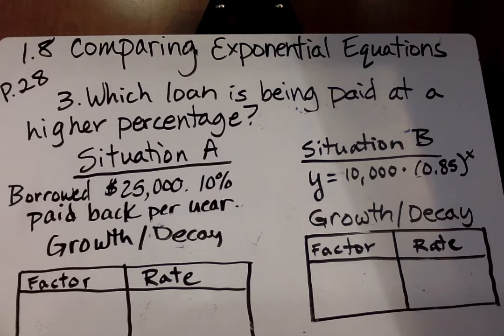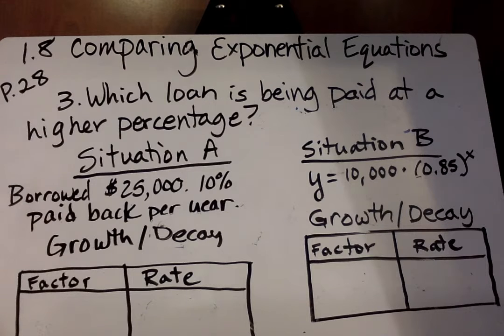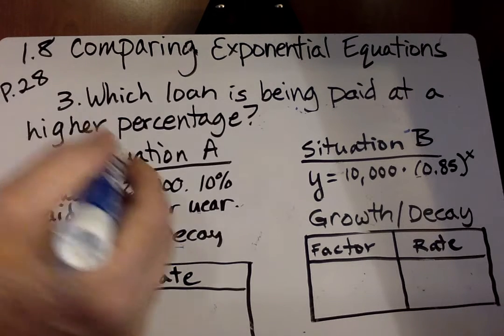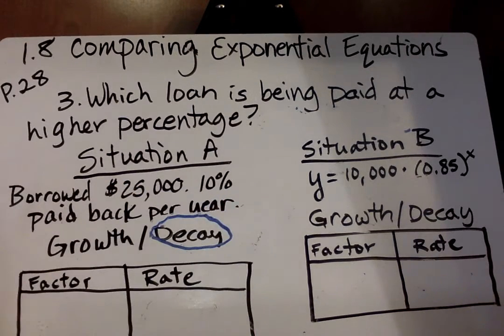Now we are going to compare these exponential equations. Number three, the situation represents the balance on a loan. Which loan is being paid at a higher percentage? Situation A: $25,000 was borrowed and they're going to pay 10% back per year. Is that a growth or is it a decay? It's a decay because the loan value is going to be going down every year.